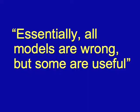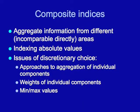Here we come to the question of human development indices. Essentially, all models are wrong, but some are useful — and composite human development indicators are exactly an example of useful models. They could be partly wrong, but they have been in use for more than 20 years and have proven quite useful. When we construct composite indices, we aggregate information from different and directly incomparable areas. We take health, education, and living standards, combine them together, and calculate the human development index. To do this, we index absolute values into relative values.